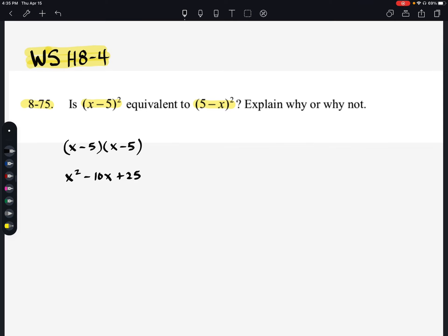If I take 5 minus x and I do the same thing, 5 minus x times 5 minus x, 5 times 5 is 25. 5 times negative x is negative 5x, and then I have a second one, so that gives me a negative 10x. And then negative x times a negative x gives me a positive x squared.